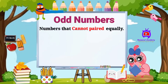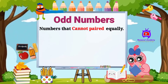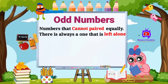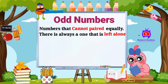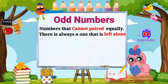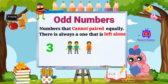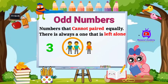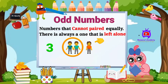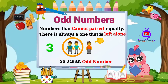Odd numbers are the numbers that cannot be paired equally — there is always one which is left alone. For example, number three. We have three kids here. If I split them into groups of two, there is one kid who is left alone. So three is an odd number.